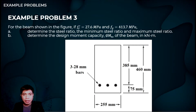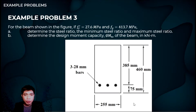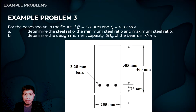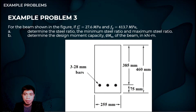Let's solve our Example Problem Number 3. For the beam shown in the figure, F sub C prime is equals to 27.6 megapascal and F sub Y equals to 413.7 megapascal. Determine the steel ratio, the minimum steel ratio, the maximum steel ratio, and then determine the design moment capacity φMn of the beam in kilonewton meters.